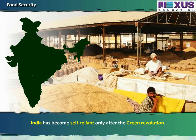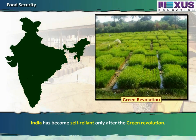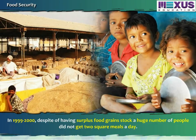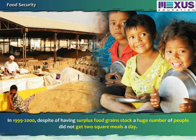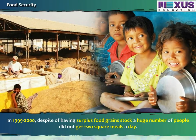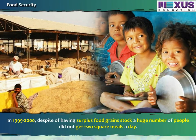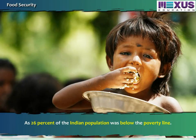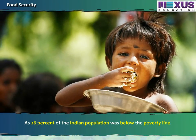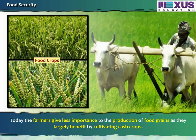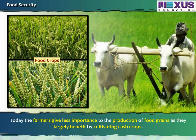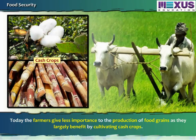India has become self-reliant only after the Green Revolution. In 1999-2000, despite having surplus food grain stock, a large number of people did not get two square meals a day as 26% of the Indian population was below the poverty line. Today, farmers give less importance to the production of food grains as they largely benefit by cultivating cash crops.